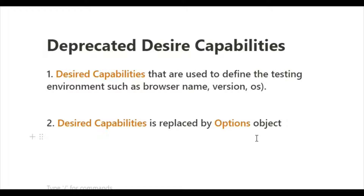Today I'm going to talk about the fact that in Selenium 4 they have deprecated the Desired Capabilities. So what exactly are Desired Capabilities? They are used to define the testing environment, such as browser name and version. Whenever you launch any browser, whatever specification you want for that browser for that particular session, that is what you can set in Desired Capabilities.